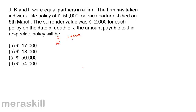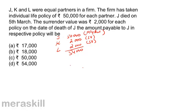K's policy has not matured but the surrender value is 2,000. L's policy also has a surrender value of 2,000. So we have surrender value, surrender value, and the maturity amount. Totally this comes to 54,000. Out of this 54,000, what is J's share? Equal division by 3: 54,000 divided by 3 gives 18,000.